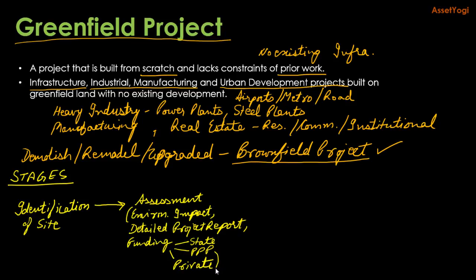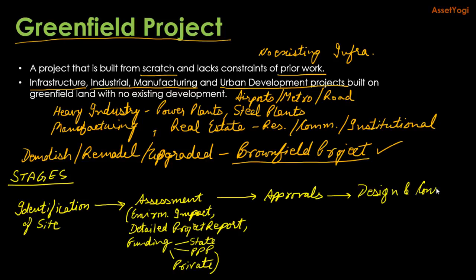Once the assessment is done, the next stage is approvals. There will be a lot of approvals required from various agencies like the environment department, pollution control board, development authority, municipal corporation, fire department, and a host of other government agencies. Then once you get all the approvals, it is followed by design and construction. The project owner will outsource the design part to an urban planner, designer, or architect, and the construction will be outsourced to a contractor.